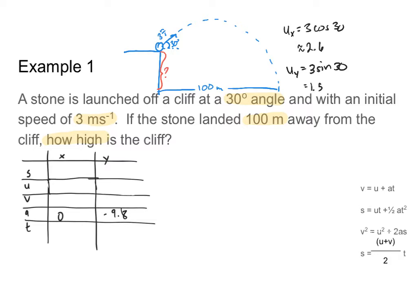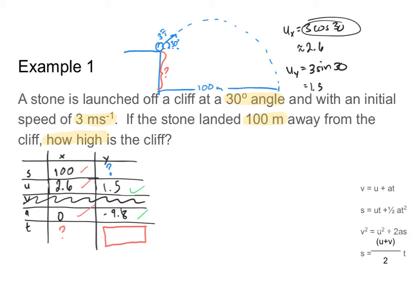Those are much nicer numbers to work with. Next, the 100 meters away from the cliff is my displacement in the x direction, so that goes in the x column of my SUVAT table. I'm trying to find how high the cliff is, which is my displacement in the y direction. I don't care about final velocity in either direction. I have three pieces of information in the x direction and only two in the y direction, so I'll use the x direction information to find time, then plug that into the y direction.